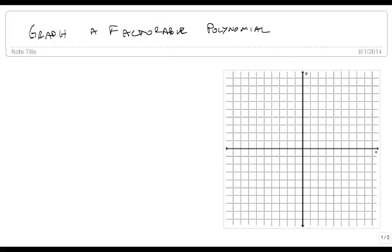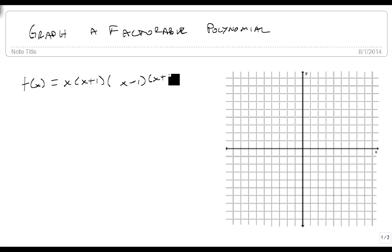We're now going to factor or graph factorable polynomials. So we're going to start with the example f of x equals x times x plus 1 times x minus 1 times x plus 2.